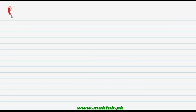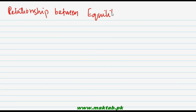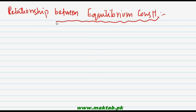Our topic is about the relationship between the equilibrium constants. ابھی تک آپ اس chapter میں غور کر رہے ہوں گے کہ ہماری ساری بات اسی constant کے گرد گھوم رہی ہے۔ Equilibrium constant کا اب ہم نے ایک اور relationship، ایک اور formula بتانا ہے، derive کرنا ہے with respect to some other thing — وہ کیا ہے وہ بھی ہم دیکھ لیتے ہیں۔